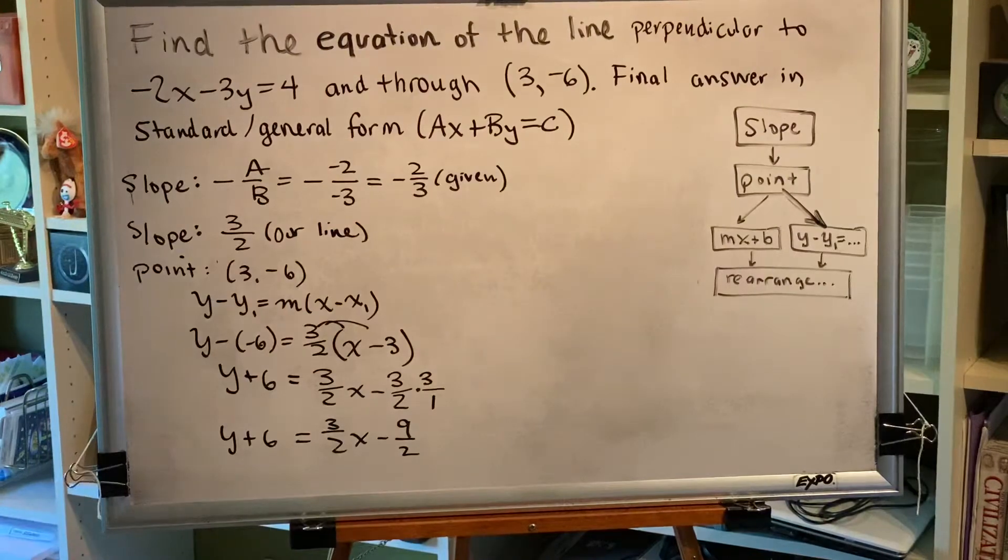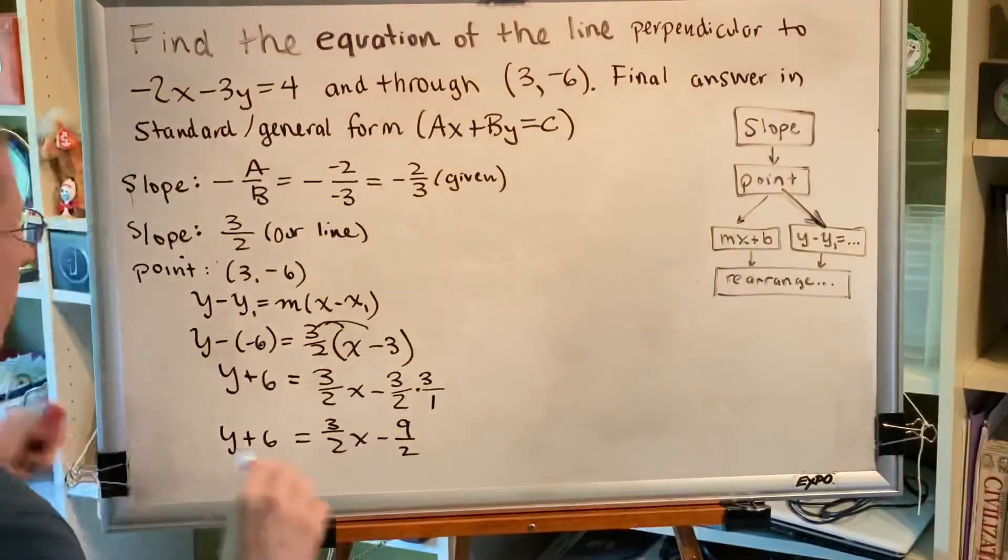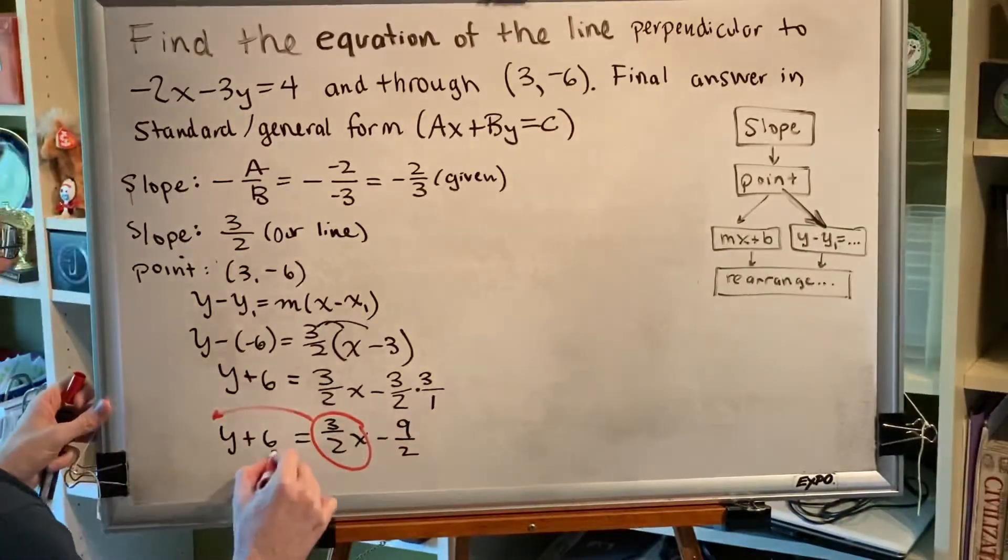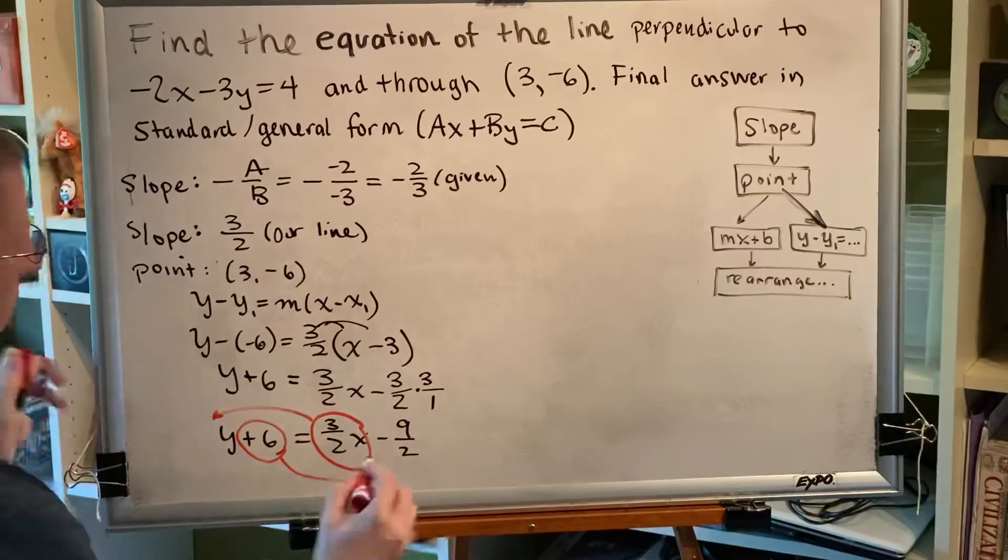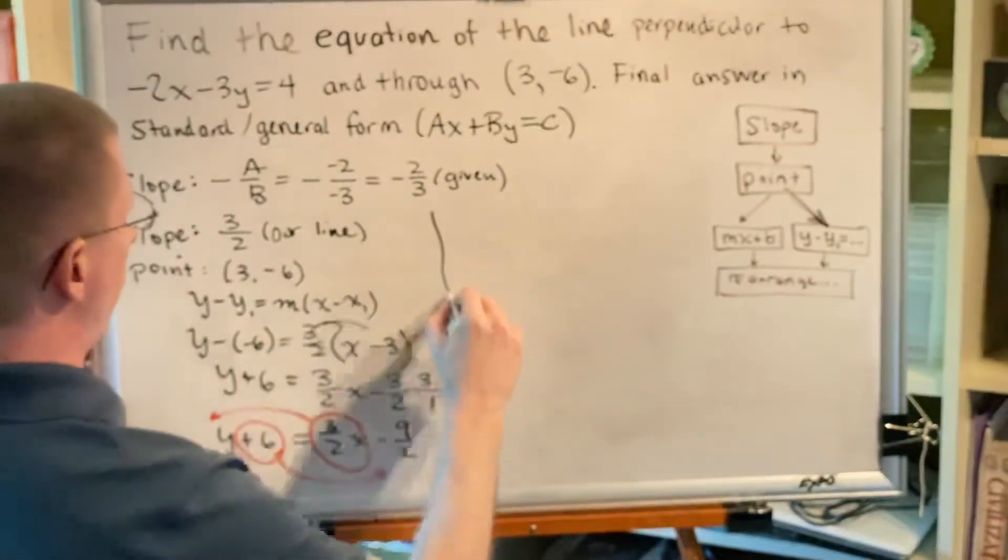My final answer for this problem needs to be in standard general form Ax + By = C. That means any term with an x or a y needs to be on the left side and any term with no x no y needs to be on the right side. So I have a few things that I need to move around here.